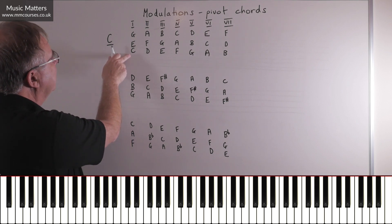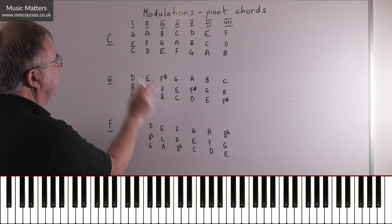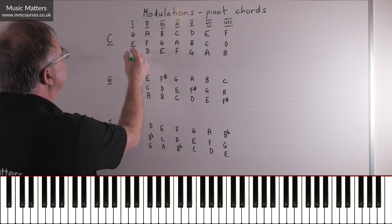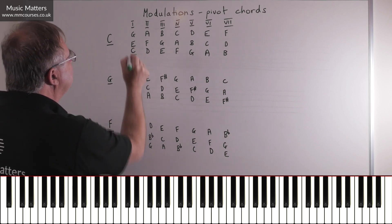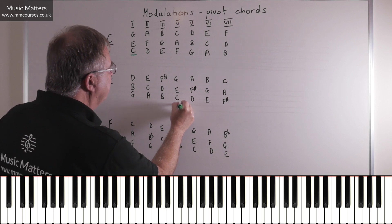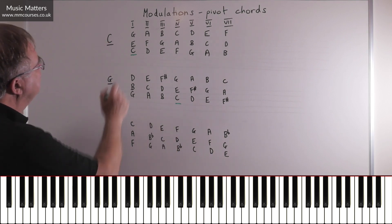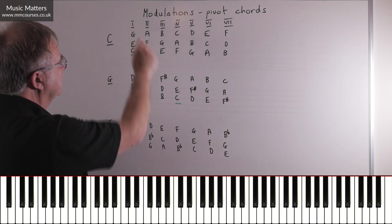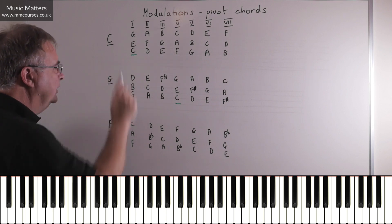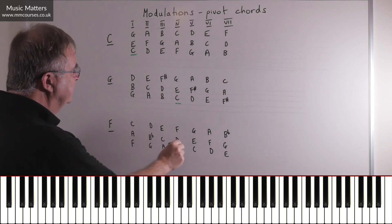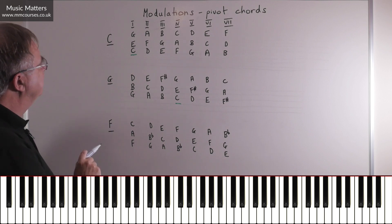So let's have a look at this first one, C, E, G. Is this a chord in G major? Well it is, because C, E, G there comes up here, doesn't it? So you can see that the C, E, G is a pivot chord. You can also see that it's a pivot chord into F major, but we'll come back to that later.